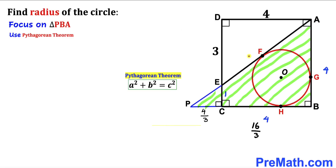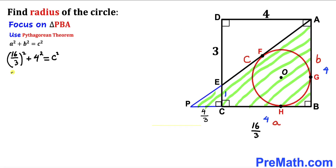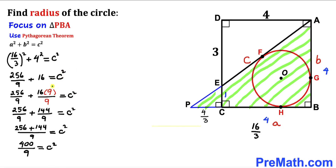Let me call the hypotenuse c, and the two legs a and b. Filling in the Pythagorean formula: (16/3)² + 4² = c², which gives 256/9 + 16 = c². Converting 16 to ninths gives a common denominator of 9, and adding gives c² = 400/9.